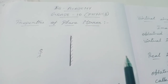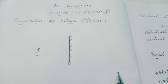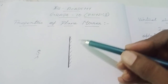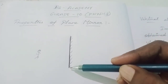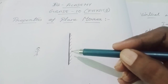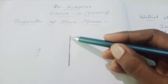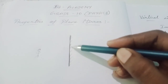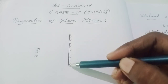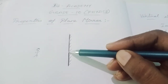Hi dear students, this is BS Academy Grade 10 Physics. In this video we are going to discuss the properties of the plane mirror. A plane mirror consists of two surfaces — one surface is polished and the other surface is faded. This is the faded part of the plane mirror and this is the polished surface.